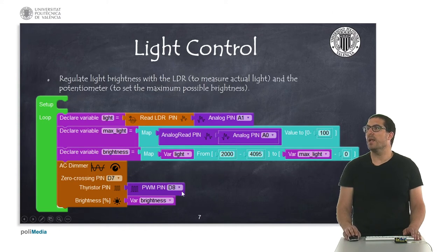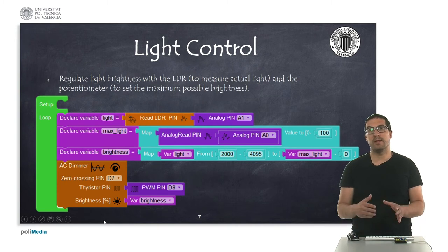And then in this last example, what we have is we are combining the potentiometer and the measurements from the LDR, so it depends on the light conditions, the brightness for the lamp will be different.